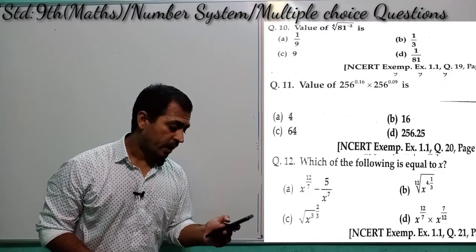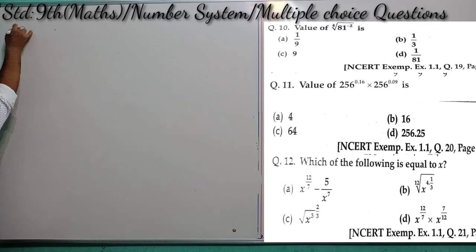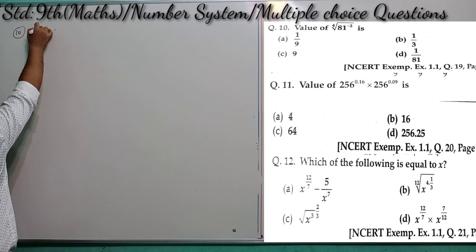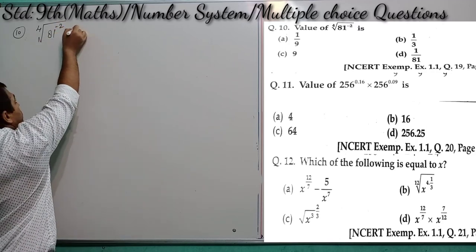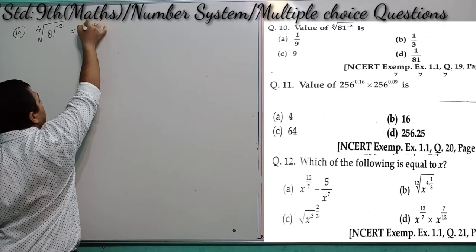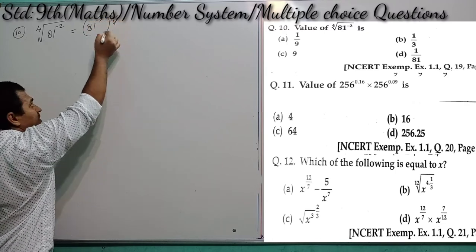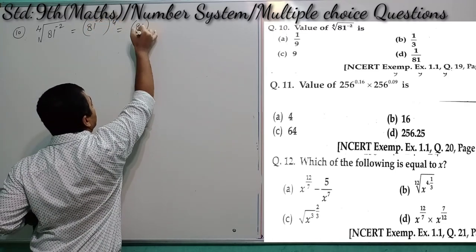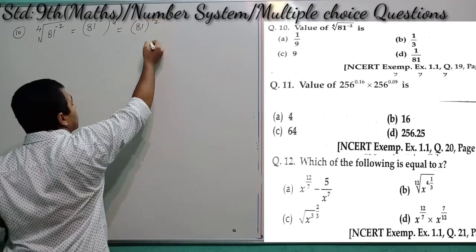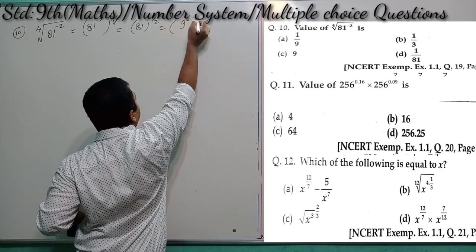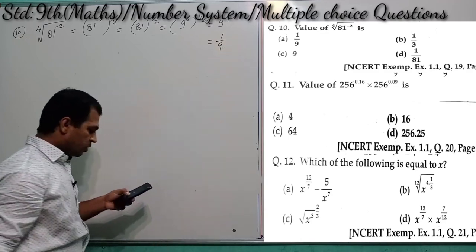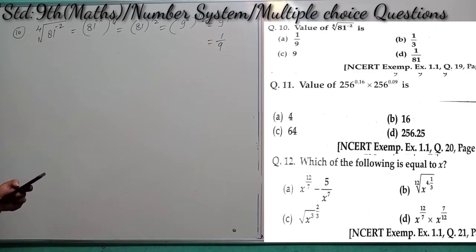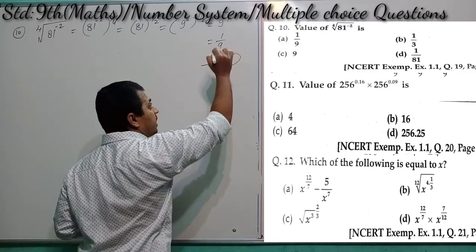Moving to question number 10: find the value of ⁴√(81^(−2)). Writing as (81^(−2))^(1/4) = 81^(−2/4) = 81^(−1/2). Since 81 = 9², we get (9²)^(−1/2) = 9^(−1) = 1/9. Option number A is the correct one.